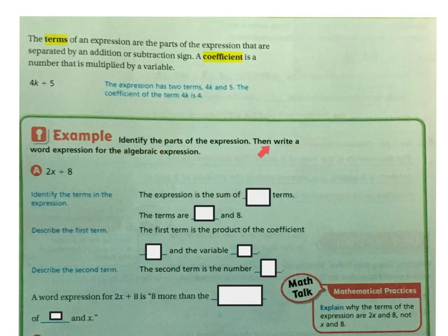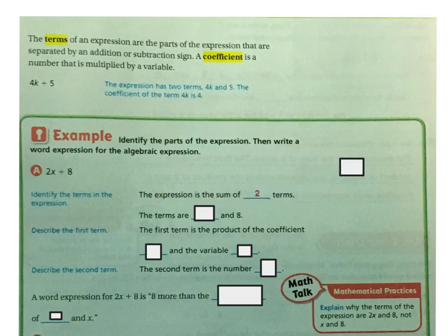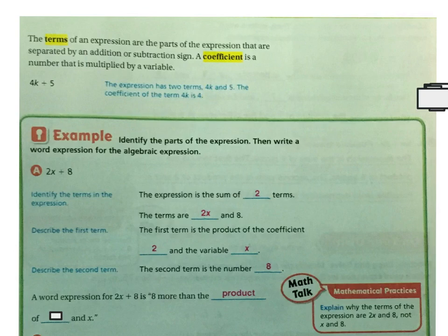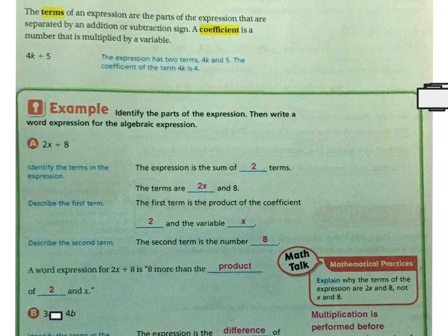Example: identify the parts of the expression, then write a word expression for the algebraic expression 2x plus 8. First, identify the terms in the expression — the expression is the sum of two terms: 2x and 8. The first term is a product of the coefficient 2 and the variable x. The second term is the number 8. A word expression for 2x plus 8 is eight more than the product of 2 and x.